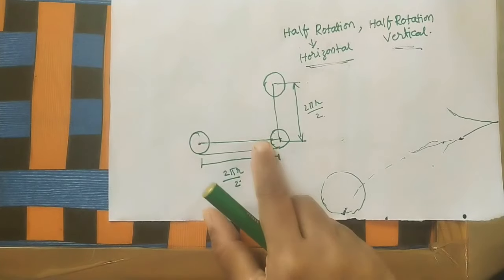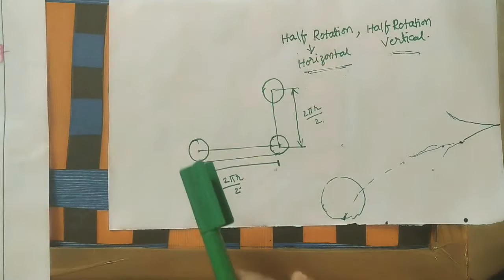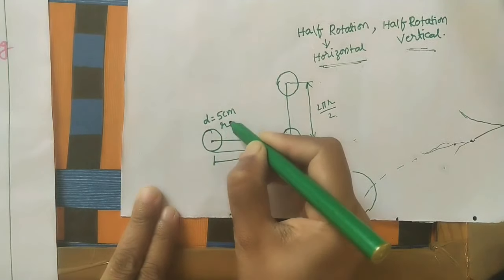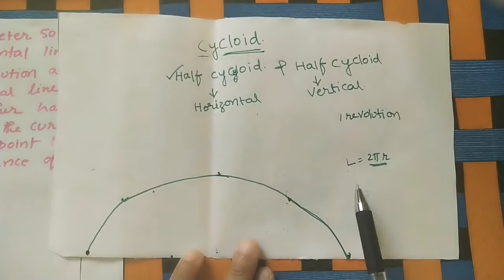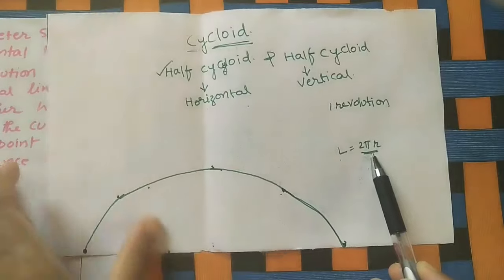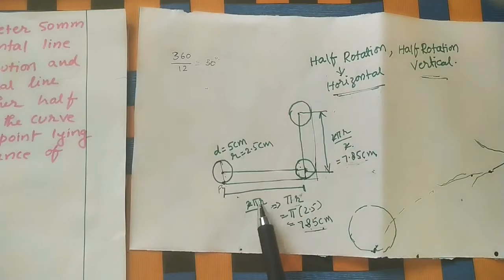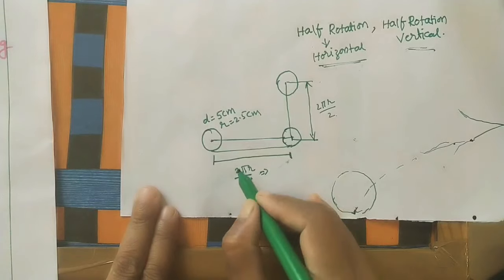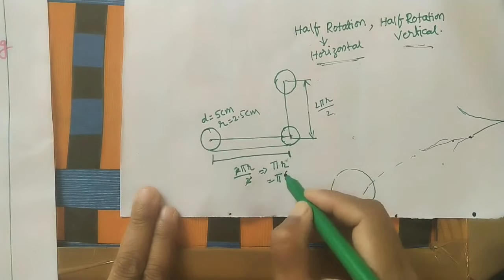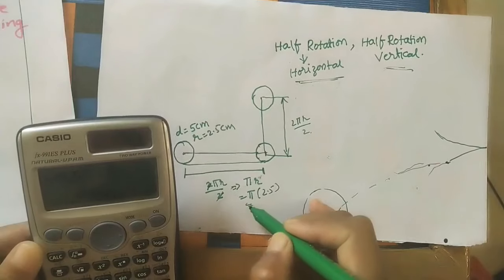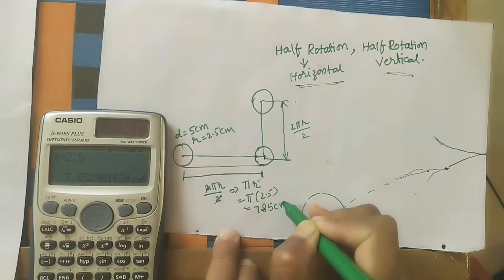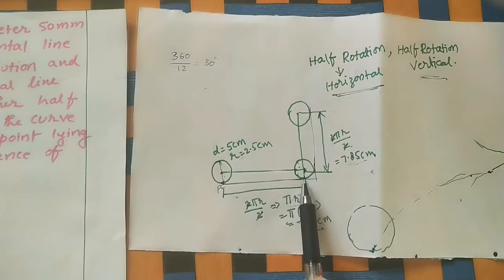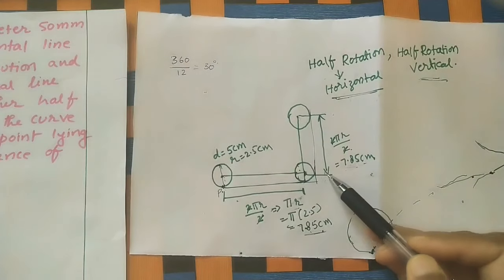The diagram will come like this for the circle. The diameter is given as 5 cm, so the radius is 2.5 cm. For one complete revolution it moves circumference length. For half revolution: 2πr/2 = πr. We calculate: π × 2.5 = 7.85 cm. So the circle moves 7.85 cm horizontally and also 7.85 cm vertically for the remaining half.